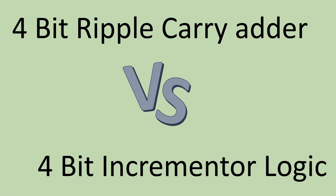Hello friends, welcome back to the channel. In this video I will tell you the difference between a four-bit ripple carry adder and four-bit incremental logic. Our focus will be which will consume more area and which will consume lesser area. A four-bit ripple carry adder takes more area with respect to four-bit incremental logic, but the dilemma here is wherever we can use four-bit incremental logic, at the same place we can use four-bit ripple carry adder — but the reverse is not true, and most people commit this mistake.